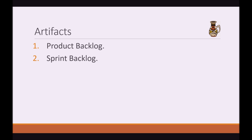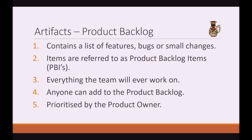Artifacts. We have two artifacts in Scrum: a product backlog and a sprint backlog. The product backlog contains a list of features, bugs, or small changes that could ever be done to the product — essentially a long list of items prioritized by the product owner. These items are referred to as PBIs, or product backlog items. Anyone can add to the product backlog, but it's the product owner who prioritizes the items to decide which gets done first.